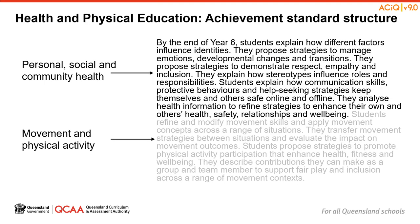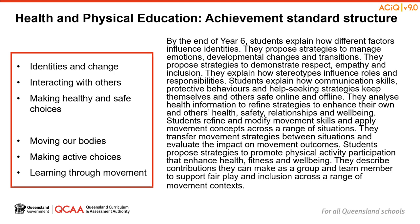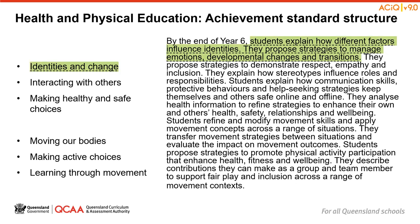The Achievement Standard follows a consistent structure. The content related to the Personal, Social and Community Health strand is represented first, and the content related to the Movement and Physical Activity strand is represented second. The statements within the Achievement Standard paragraph are structured in a uniform way, with substrands correlating to how the paragraph is structured. For example, the Identities and Change content is positioned first in the Personal, Social and Community Health part, and the Moving Our Bodies content is positioned first in the Movement and Physical Activity part.